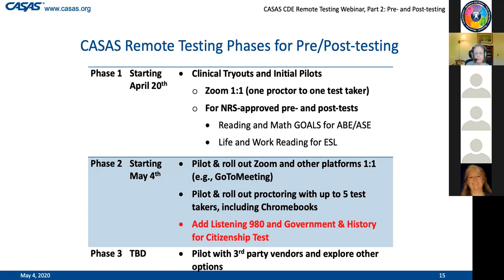We are adding on the ability to do remote testing with the Listening 980 series, as well as the Government and History for Citizenship test. In the future, we are still exploring with third-party vendors to see if we can work something out to make that more efficient. There are other options we're looking into that if they can make this a more efficient and less costly proposition, we will certainly look into them and let you know as soon as we've worked anything out.